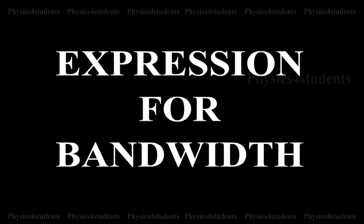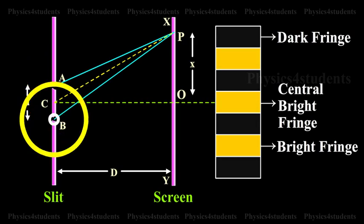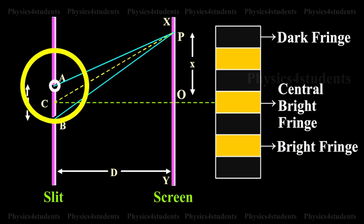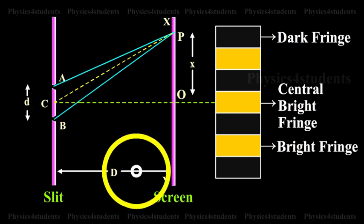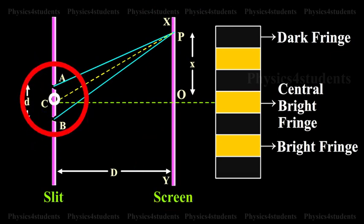Expression for Bandwidth. Let D be the distance between two coherent sources A and B of wavelength lambda. A screen XY is placed parallel to AB at a distance D from the coherent sources. C is the midpoint of AB.